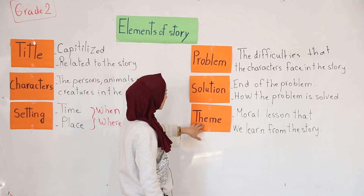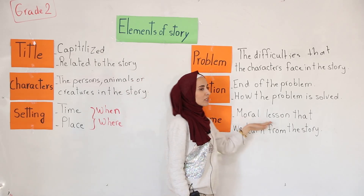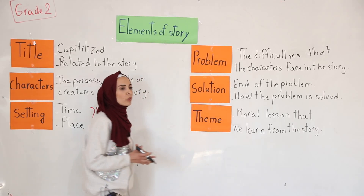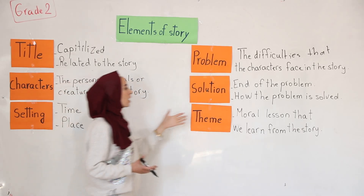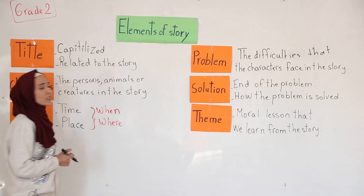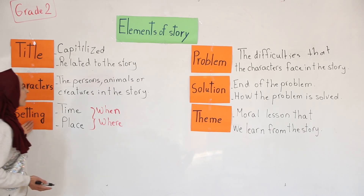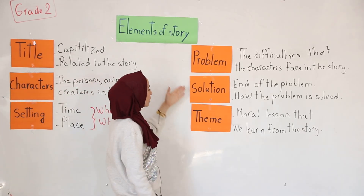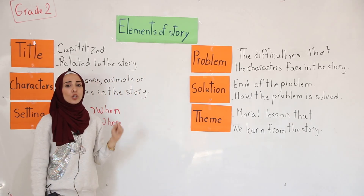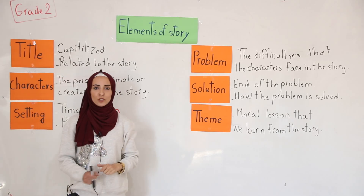Number six, we have the theme. The theme is the moral lesson that we learn from the story. At the end of the story we should learn something, which is the moral lesson. So, the six elements of the story are: title, characters, setting, problem, solution, and theme. Every story should have these elements. Thank you for watching.